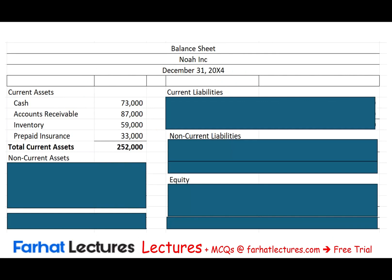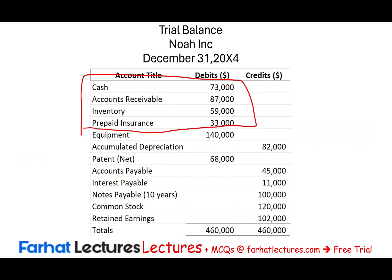Under current assets we have cash, accounts receivable, inventory, and prepaid expenses. What else could you have under current assets? You could have supplies — that's a common current asset. You could also have short-term investments, since those are assumed to be converted to cash. Now we have total current assets — we've used up these accounts.